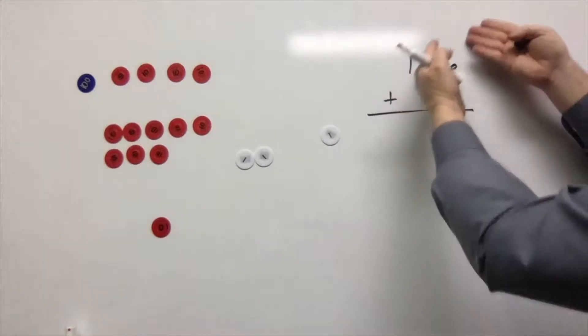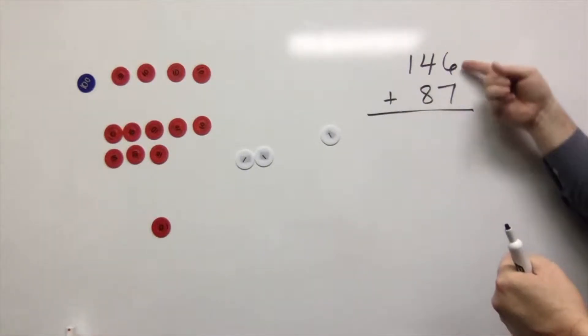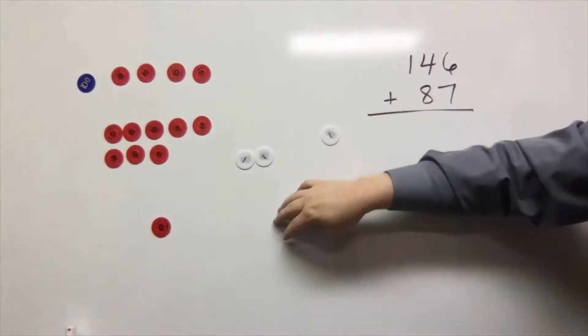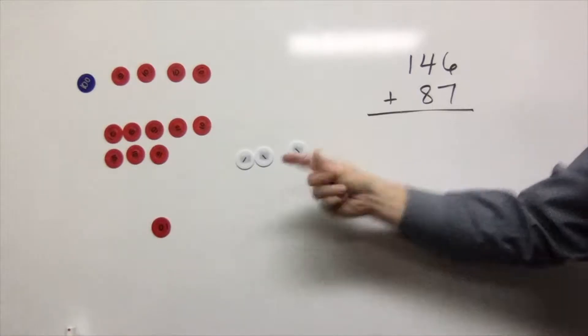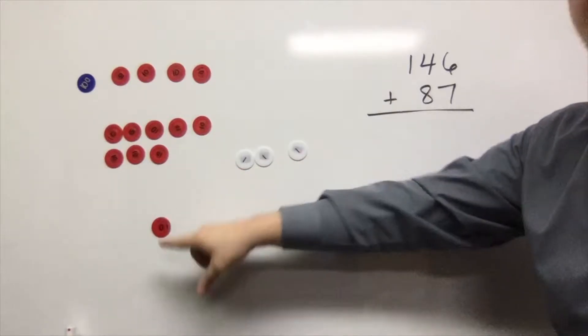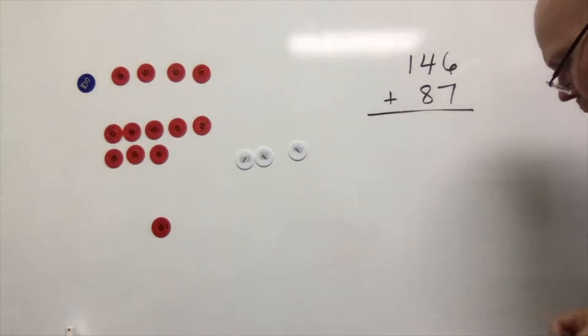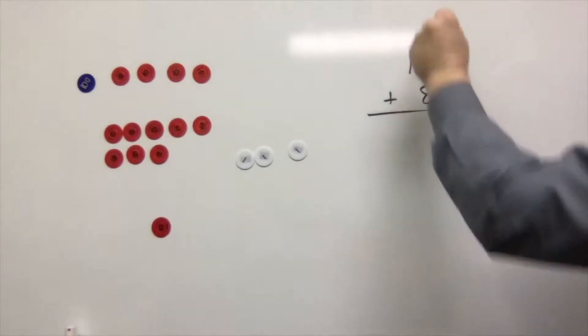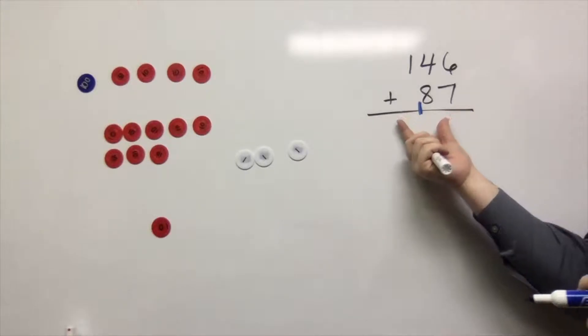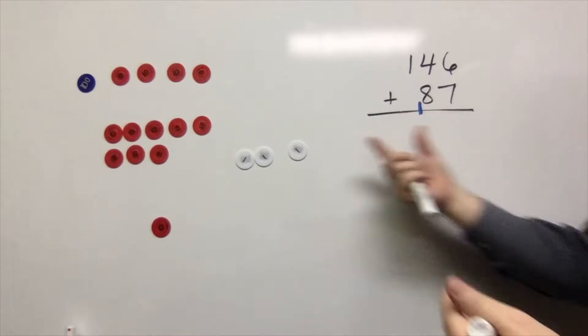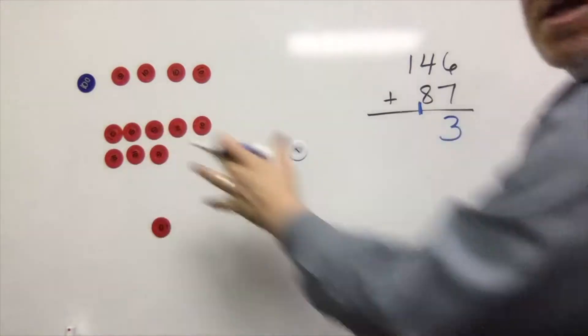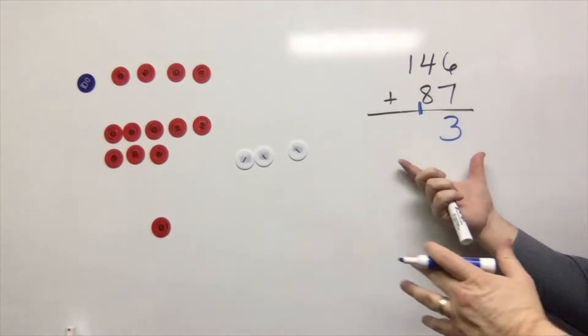So how am I going to record that over here? Well, we know that seven plus six is 13 because that's what we saw over here. And we have these three ones left over because we cashed 10 of them in for a ten. So we're going to have these three ones left over. Boom. And that's what we're seeing. So now our concrete matches our abstract.